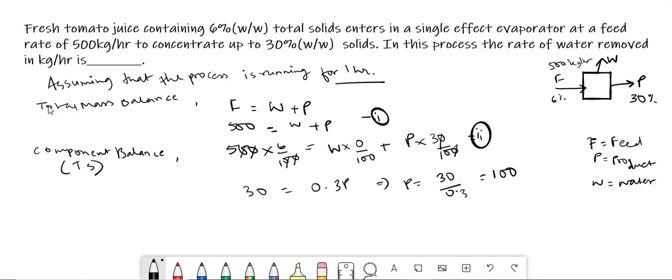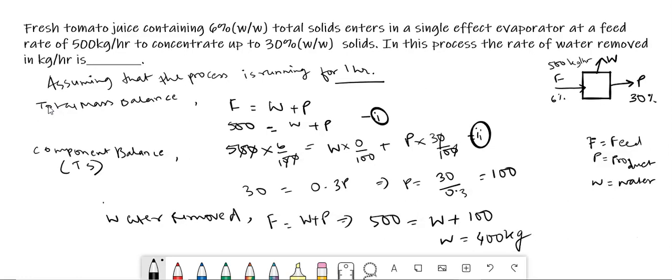So, the product amount is 100 kg. So, now water removed we can find this amount from the first equation. So, the answer is 400 as 400 kg water is being removed in one hour. So, we can say that the rate of water removed in kg per hour is 400.